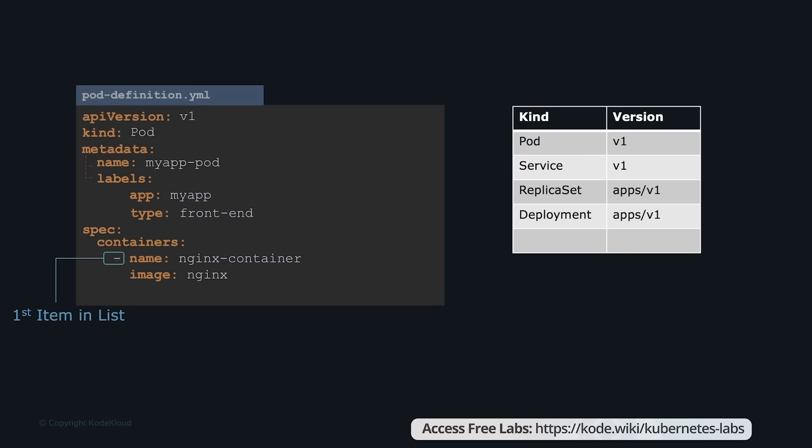We'll add a single item in the list since we plan to have only one container in the pod. The item in the list is a dictionary — add a name and image property. The value for image is nginx. Once the file is created, run kubectl create -f followed by the file name (pod-definition.yaml) and Kubernetes creates the pod. To summarize: remember the four top-level properties — API version, kind, metadata, and spec — then start adding values to them depending on the object you're creating.